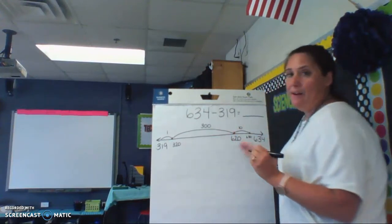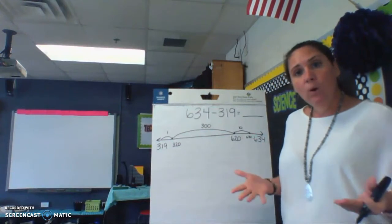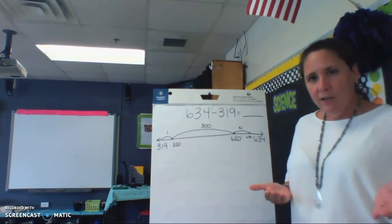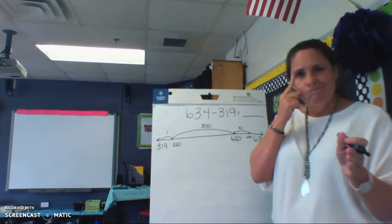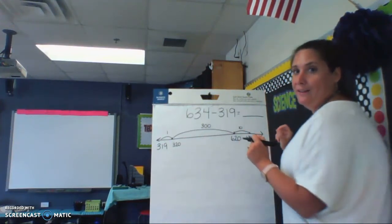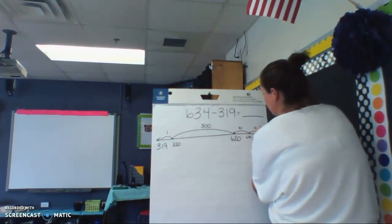But I'm still not there, because this is 630 and I need to get to 634. So how many more miles do I have to go to get from 630 to 634? You said 4, the answer is correct. So it takes me 4 miles to get to 634.